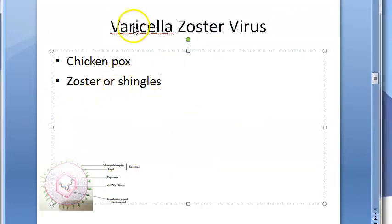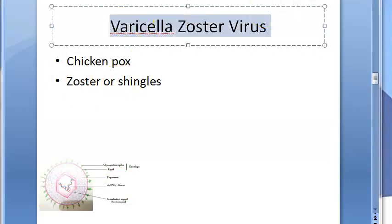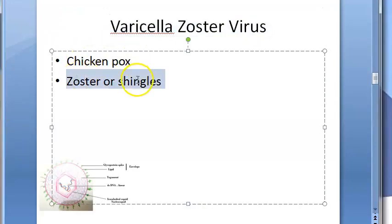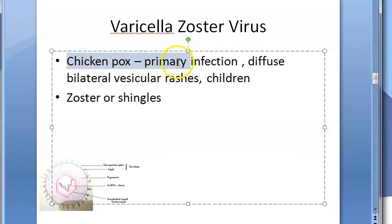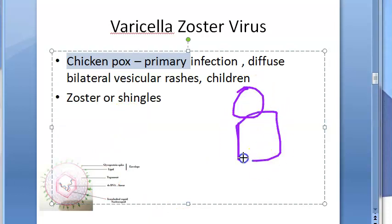Varicella Zoster Virus produces vesicular eruptions on the skin and mucous membranes, either as chickenpox or as zoster or shingles. Chickenpox is characterized by generalized, diffuse, bilateral vesicular rashes — bilateral is very specific — and usually occurs in children. It is a primary infection. Both sides of the body will have these rashes.